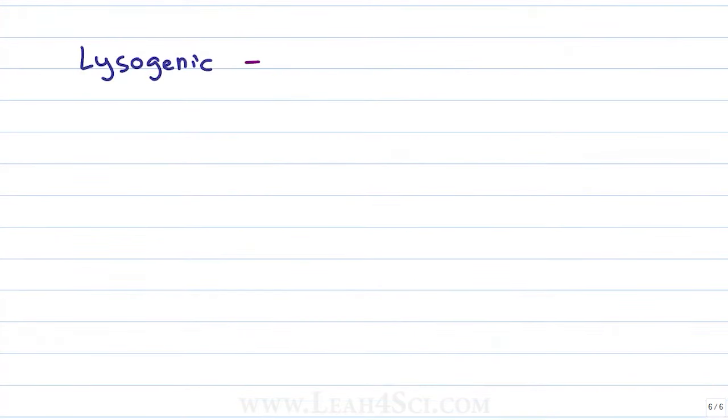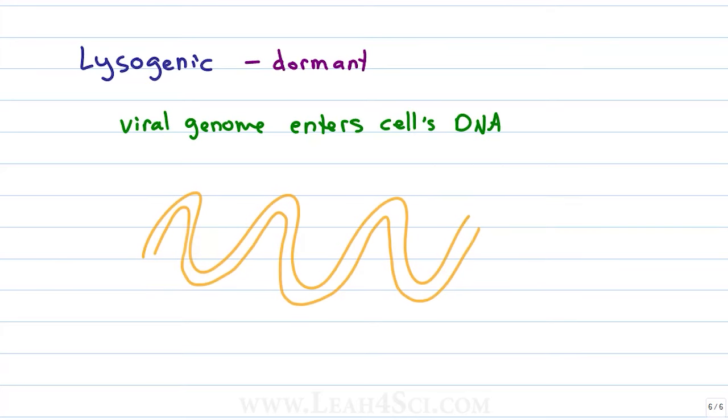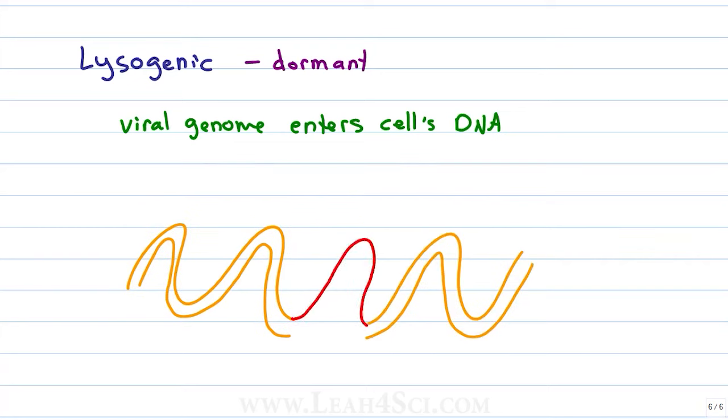The lysogenic phase is called the dormant phase but this doesn't mean it's not a problem. Because during the dormant phase, what happens is instead of making copies of the viral genome and the protein and reassembling and bursting the cell, the viral genome finds a comfy spot within the cell's own DNA and just parks itself there. The viral DNA enters the cell, it enters the nucleus and finds a nice comfy spot in the DNA where it cuts the DNA and just sticks itself right in. And the cell has no idea.